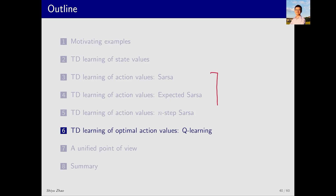We have introduced SARSA. Essentially, SARSA estimates the action value for a given policy by combining it with the policy improvement step. By iterating between policy evaluation and policy improvement, we can obtain optimal policies. Now let's move on to Q-learning.